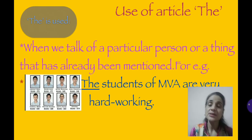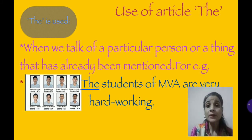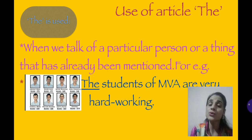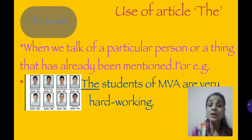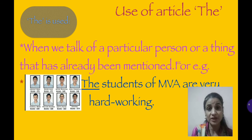Now we will learn the use of article 'the'. There are many points for 'the'. First, when we talk of a particular person or thing — when we point out some particular person or thing that has already been mentioned — we use article 'the'. For example, 'the students of MVA are very hard working.' Here I am talking about the particular students of MVA, so we use article 'the'.